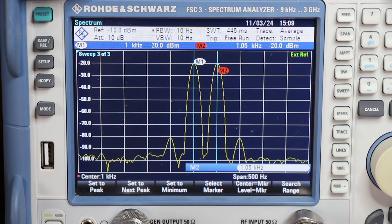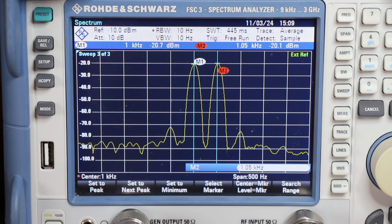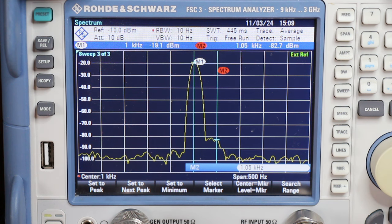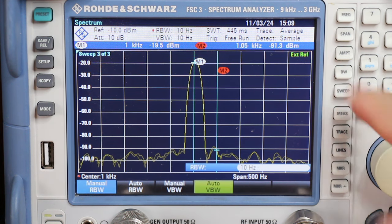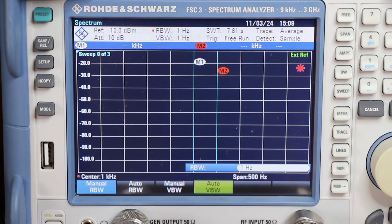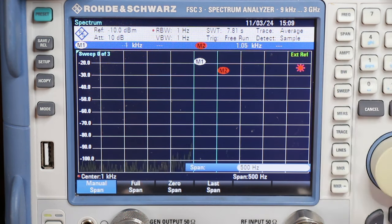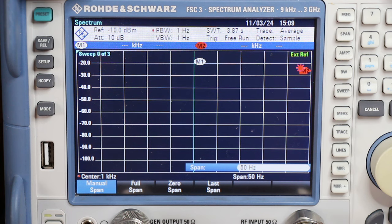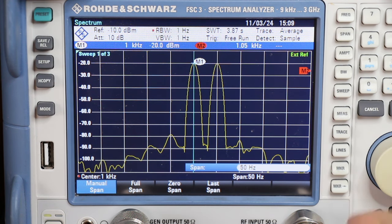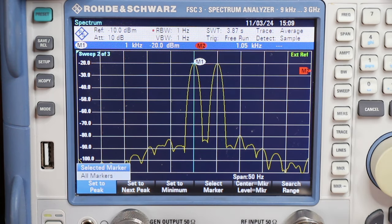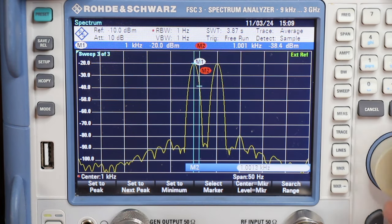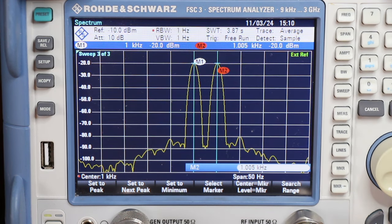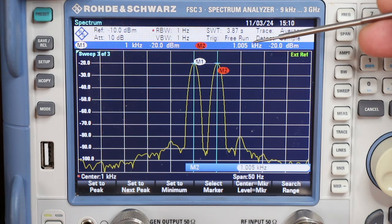Let me change the second tone. And then, the RBW, 1 hertz, span 50 hertz. Here you go. And then the marker. Let me pick the marker of the second tone. As you see here, 5 hertz apart.